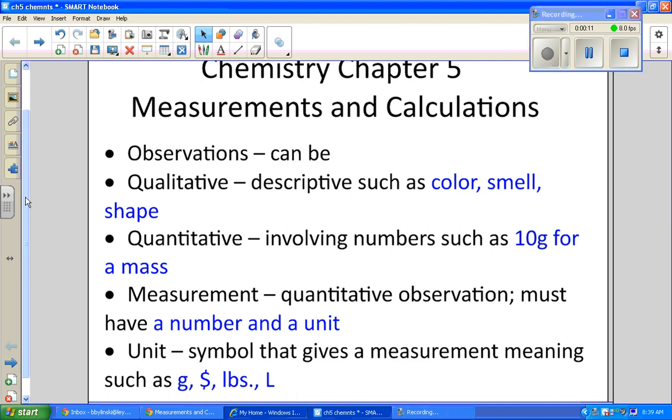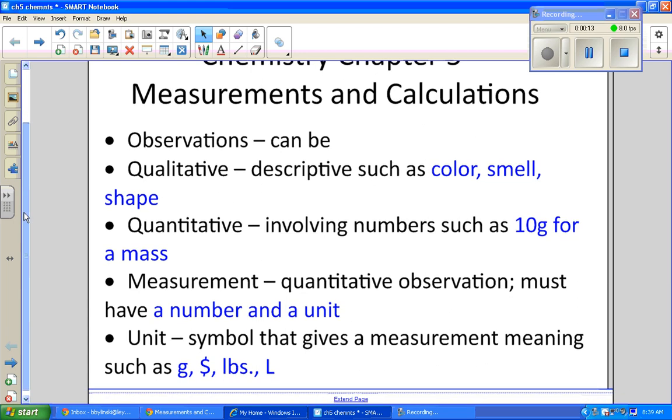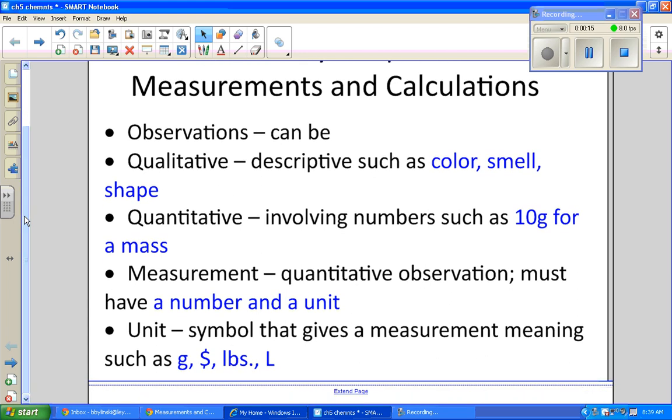From the scientific method, you've heard of observations. This is what you look at in life, and observations can be qualitative, which means they're descriptive, such as color, smell, or shape.